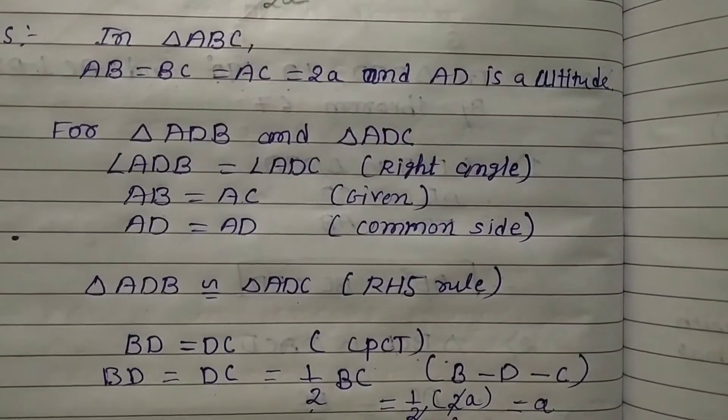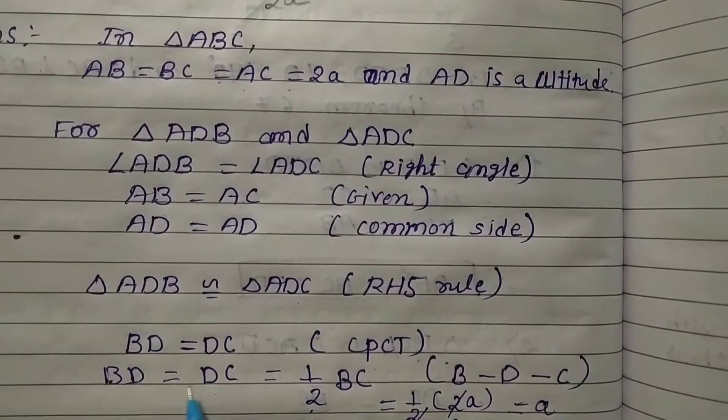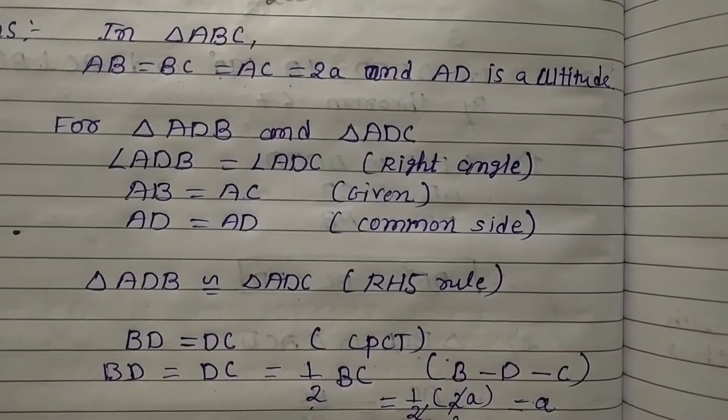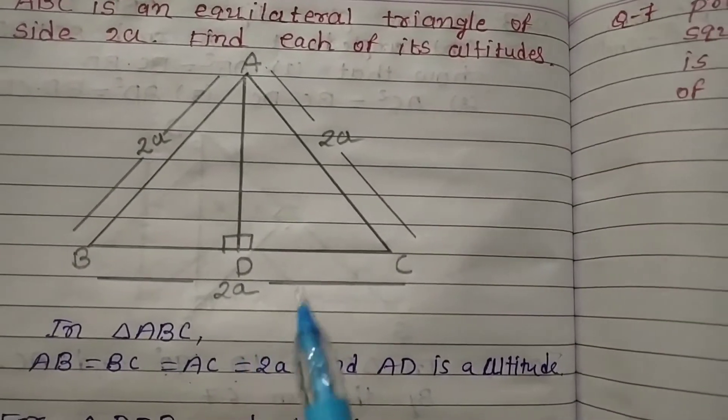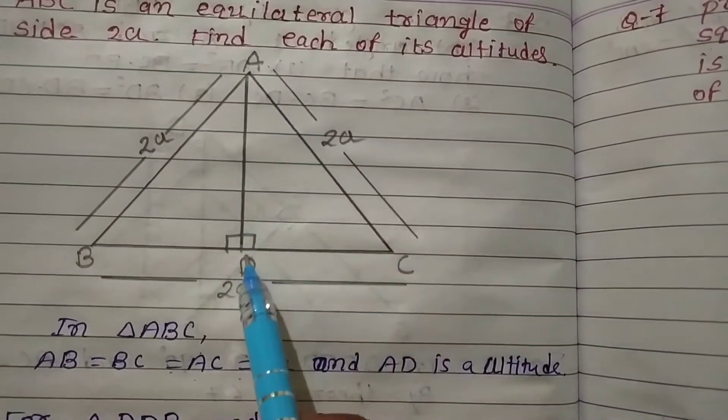Finally, BD = DC = a. Now see the figure. In triangle ADB, angle D is 90 degrees.